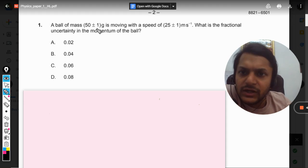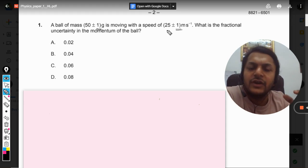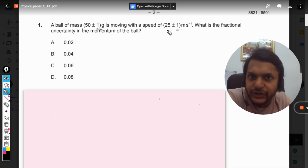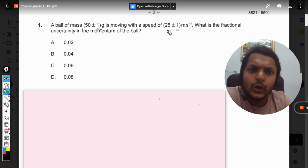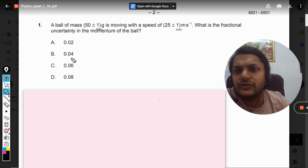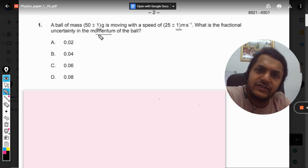We have been given the errors in the value of mass and velocity in terms of absolute numbers. Absolute error is given, but the question is about the fractional uncertainty in the case of momentum. In such a case, what we need to do first of all is concentrate on the property, on the physical quantity they are concentrating on.